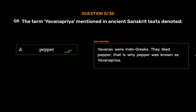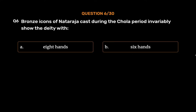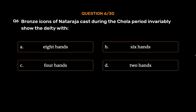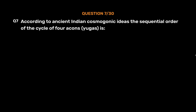Question number six: Bronze icons of Nataraja cast during the Chola period invariably showed the deity with — Option A: eight hands, Option B: six hands, Option C: four hands, Option D: two hands. The correct answer is Option C, four hands. The four-handed bronze icon of Nataraja is the finest example of Chola sculpture.